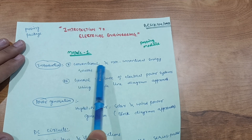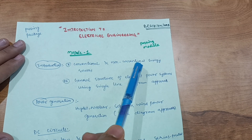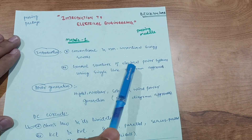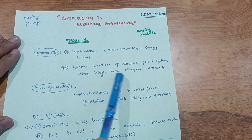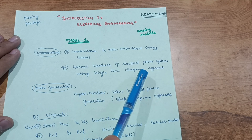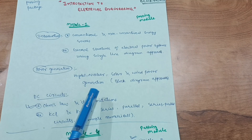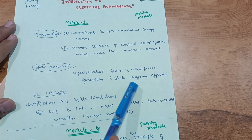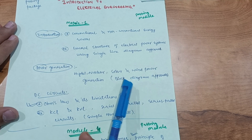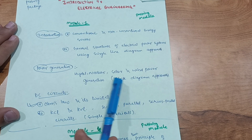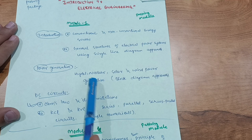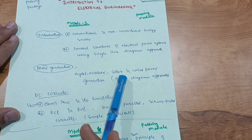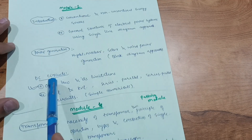In the introduction part, you have to cover conventional and non-conventional energy sources, which is a theoretical and easier concept. Then the general structure of electrical power systems using a single line diagram approach. In the second chapter on power generation, you have to cover hydel, nuclear, solar, and wind power generation using a block diagram approach.